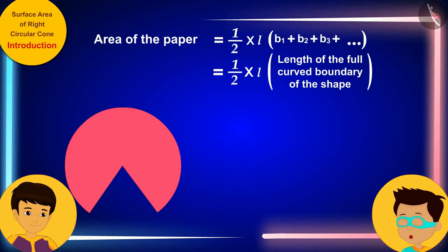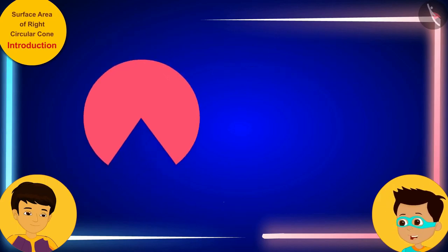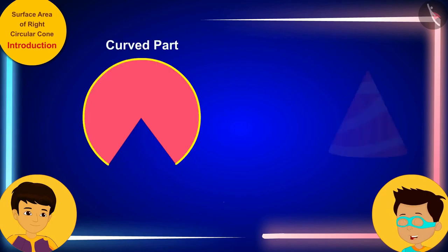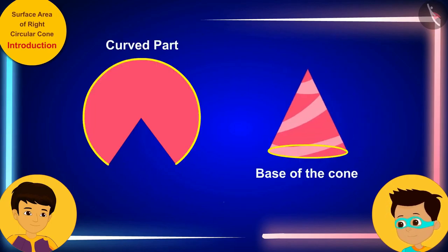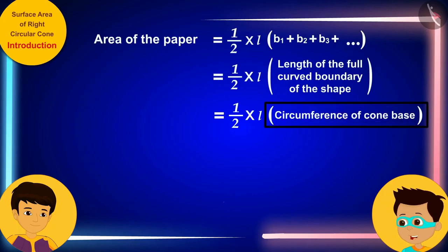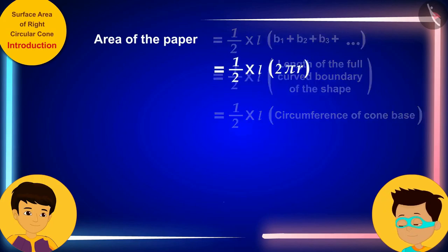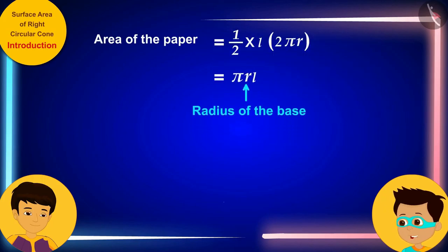That's absolutely right! And this curved part forms the base of the cone. And as we know, the circumference of this base will be 2 pi r, where r is the radius of the base.